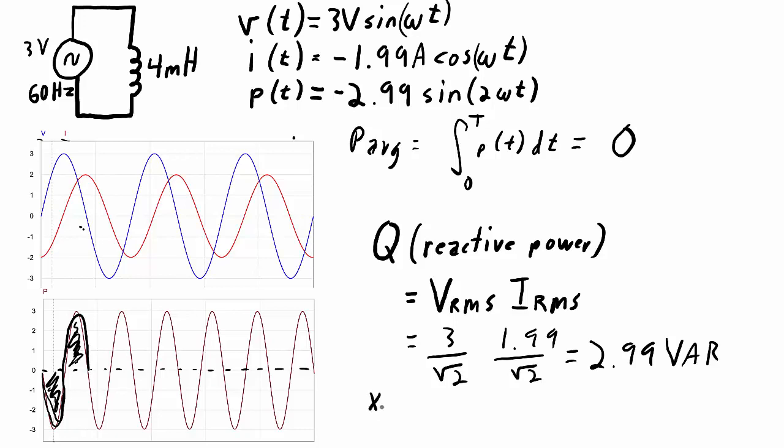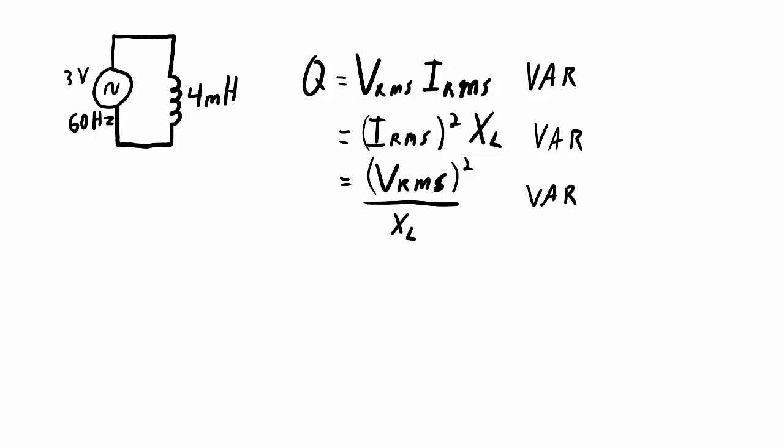Since we know for an inductor that the reactance equals the RMS voltage applied across it divided by the RMS current going through it, we can take that equation and plug it into this one and come up with a couple other forms for the reactive power of an inductor. We can say the reactive power of an inductor is also equal to the RMS current squared times the reactance of the inductor, and it's also equal to the RMS voltage across the inductor squared divided by the reactance of the inductor. So when you are asked, what is the effect on power of an inductor in a circuit? You can say that it's going to have some reactive power equal to one of these three equations. Actually, it's equal to all three of these equations. They're all going to give you an equal value.